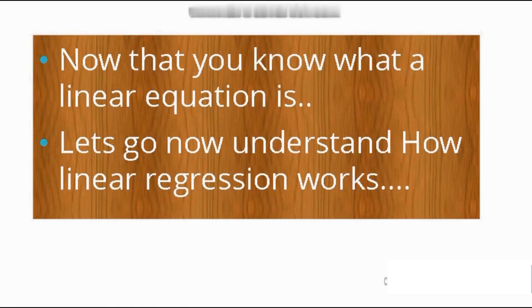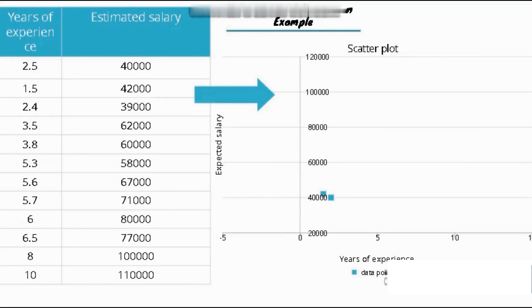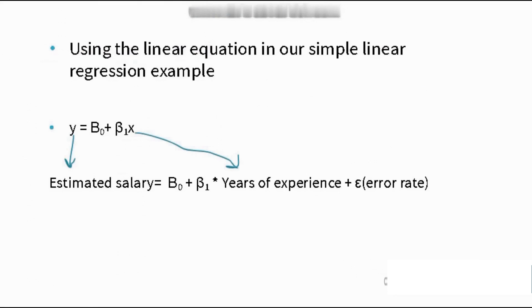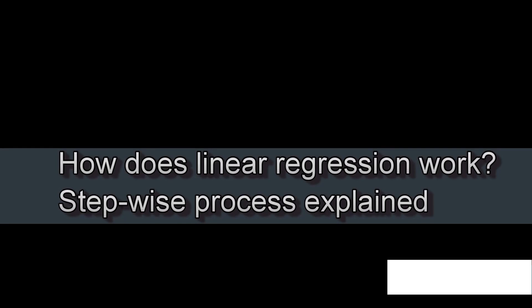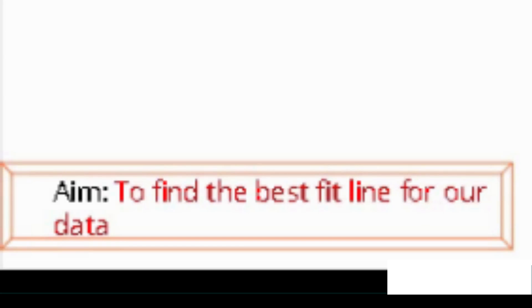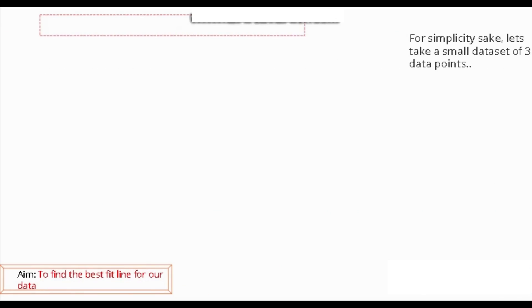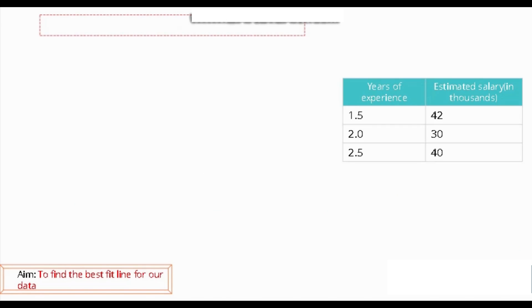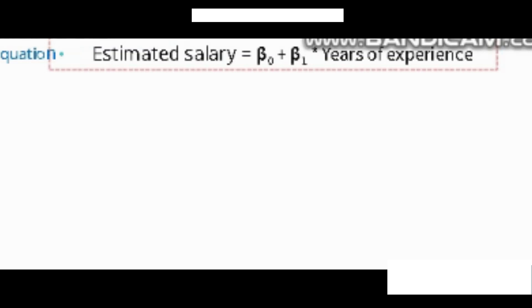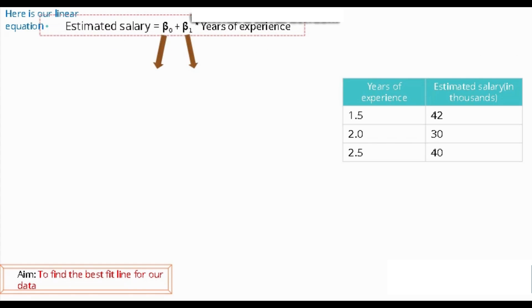Now that you know the basics of linear regression, let's see how linear regression works with the help of an example. Here is a sample dataset where the x-axis is work experience and the y-axis is salary. The regression equation for our example will look like: Salary = β₀ + β₁ × Years of Experience, where β₀ is the intercept and β₁ is the slope.